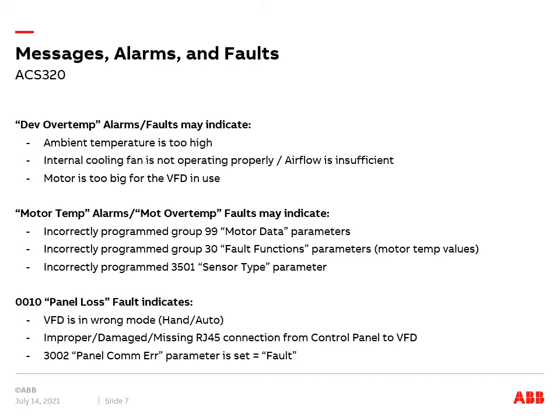The various motor temperature alarms and faults usually indicate the VFD parameters are not programmed correctly. Check groups 99 and 30 and also parameter 3501. Panel loss is the VFD saying the connection between the VFD and control panel has been severed when in hand control. Check the integrity of this connection. It can also be triggered when parameter 3002 panel comm error is set equal to fault, and it should not be.